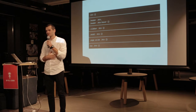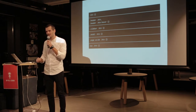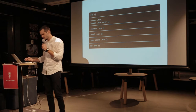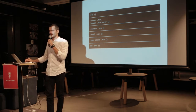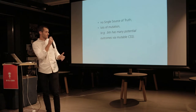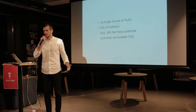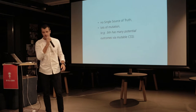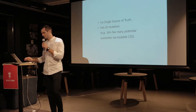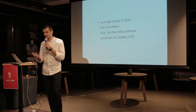All six variations change the original button, making it really hard to know what's going on in your project. As Harry points out in the article, there are two major problems with this: there's no single source of truth, because you're always changing the original object, and there's lots of mutation. The component has many potential outcomes via mutable CSS.